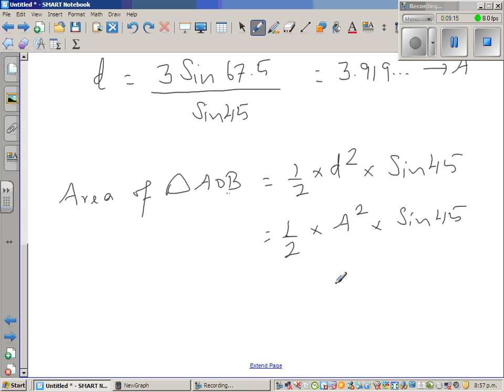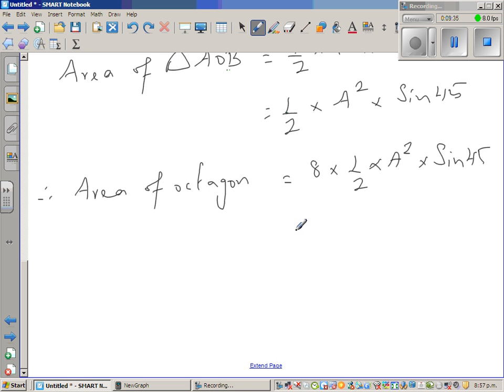Therefore, area of triangle A, area of octagon. Area of octagon would be 8 times half times A squared times sine 45, which is nothing but 4A squared sine 45, which is the area of octagon.